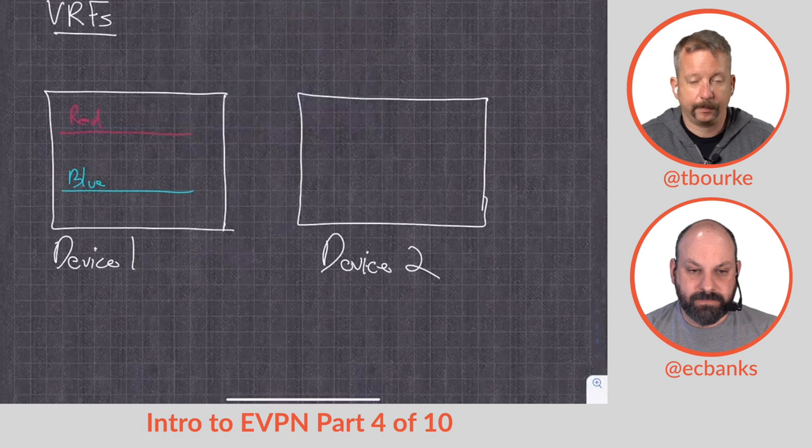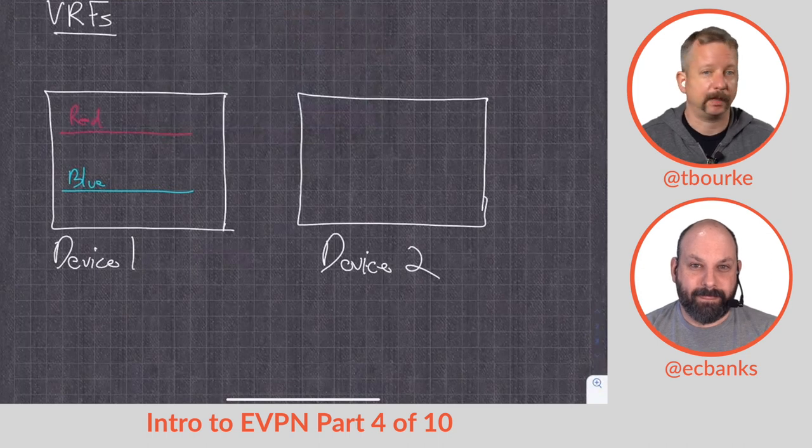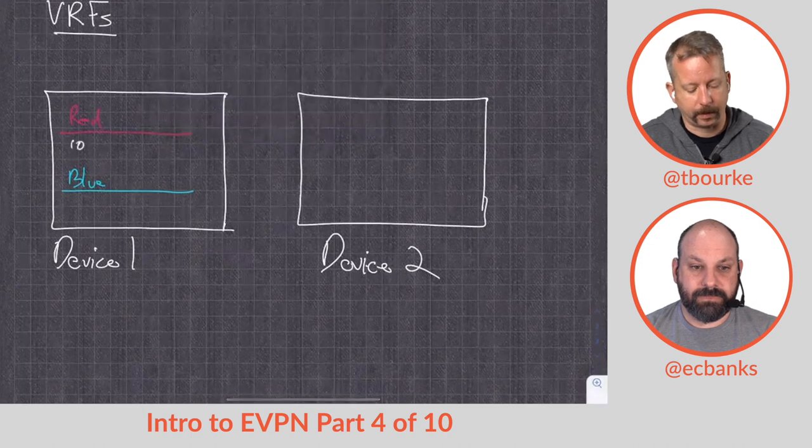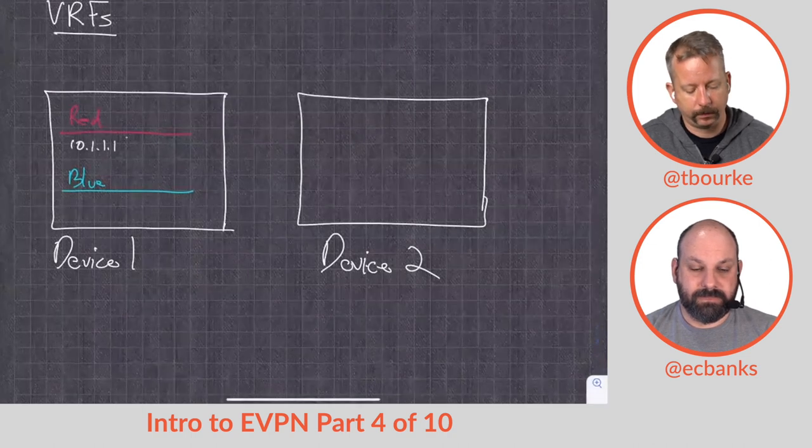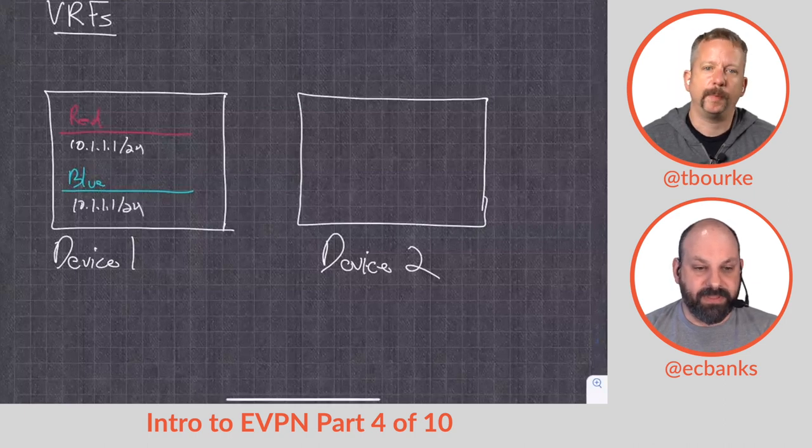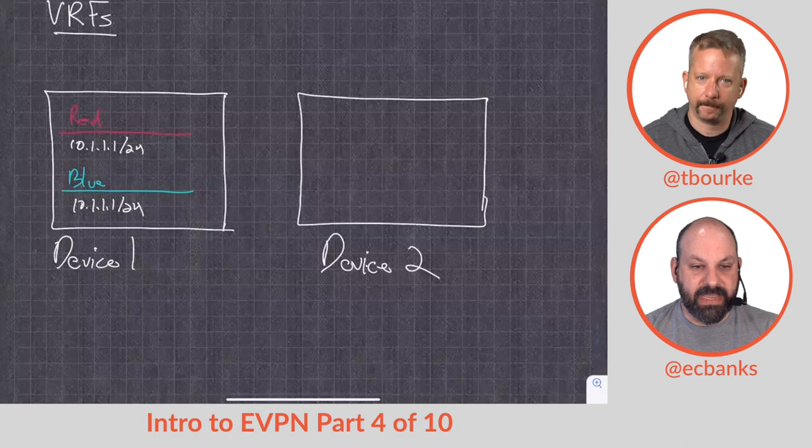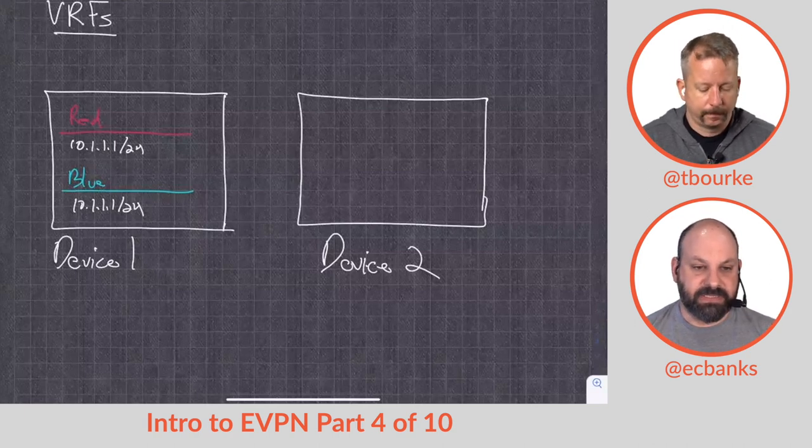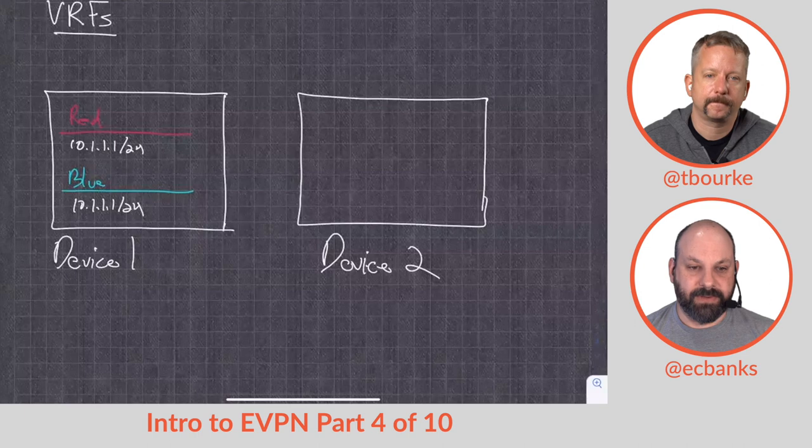And perhaps even simpler, they're just separate routing instances that can have overlapping IP addresses. So I can have the same IP address in one as I have in the other. So I've got red, it's got 10.1.1.1 as an interface and blue's got 10.1.1.1. Yeah, I buried the lead. You can have these multiple address spaces coexist but be separate.